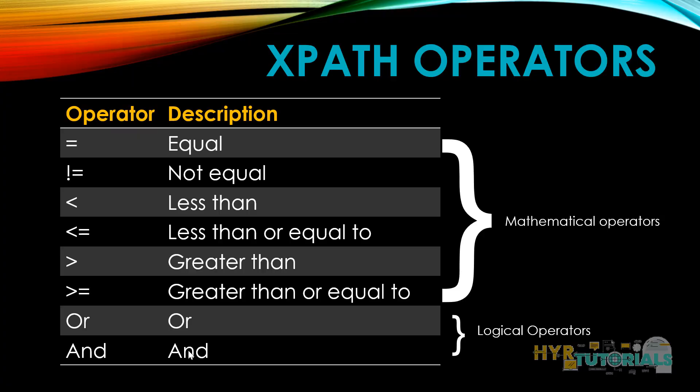The next one is logical operators. Where exactly are we going to use logical operators? Basically, if you want to find out an element using an XPath, we are going to write one condition. If your element is not becoming unique with that one condition, you will add one more condition. We are going to use one of these logical operators to combine multiple conditions.